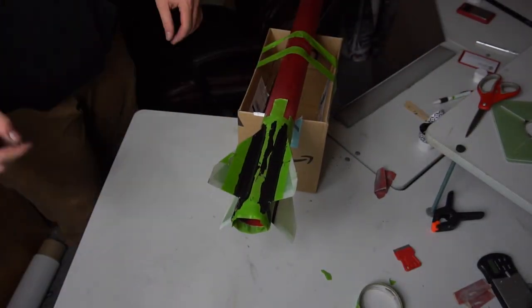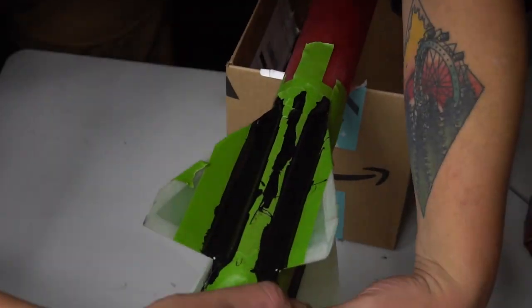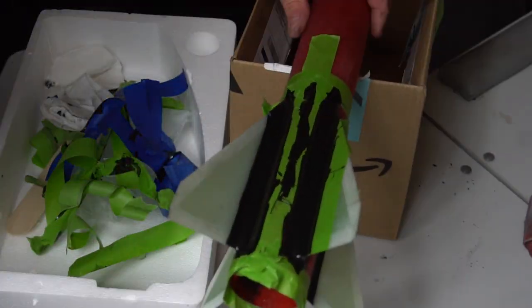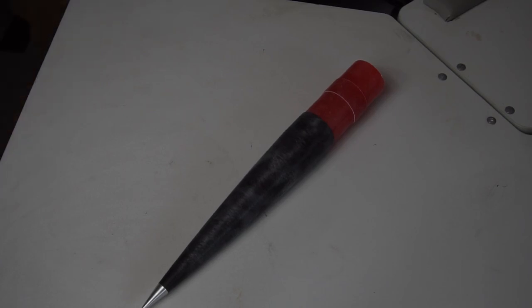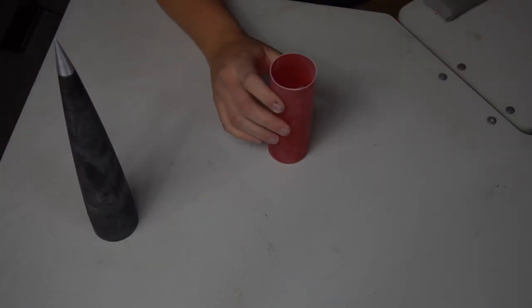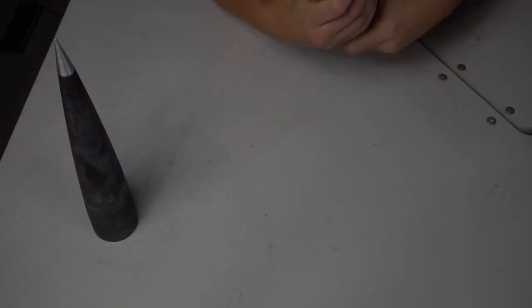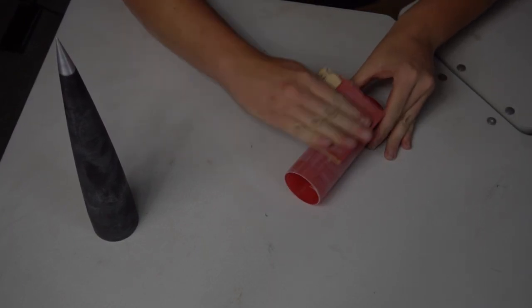Now just simply repeat the process three more times allowing the epoxy to fully cure between your sets of fillets and boom the hard part of building your Wildman Mach 2 is complete. From here on out it's business as usual with building a high power rocket so we're going to start with the nose cone and sand everything that needs bonded as usual.